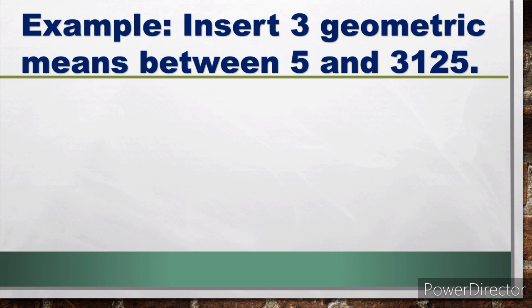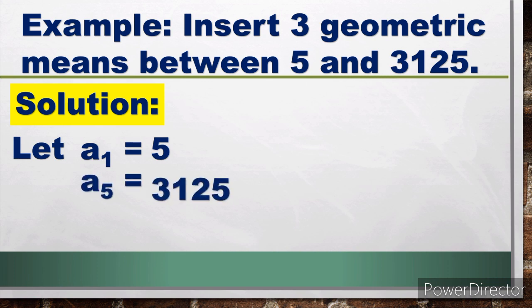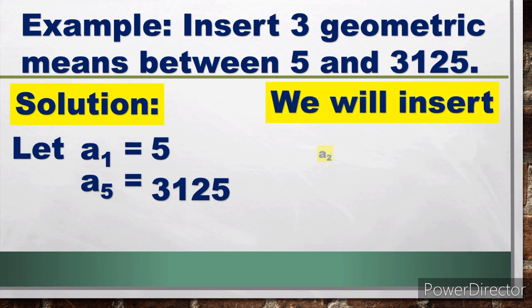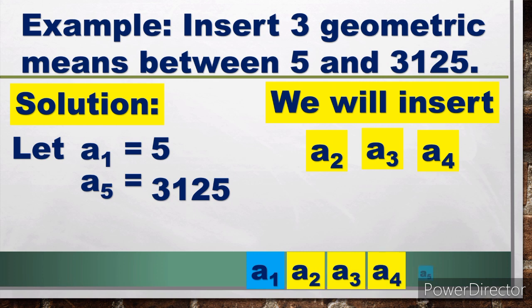Example 1: Insert three geometric means between 5 and 3125. Let a₁ (the first term) be 5, and the last term be 3125. If we insert three terms, there will be five terms total — a₂, a₃, and a₄. So the sequence is: a₁, a₂, a₃, a₄, a₅, where a₁ = 5 and a₅ = 3125.